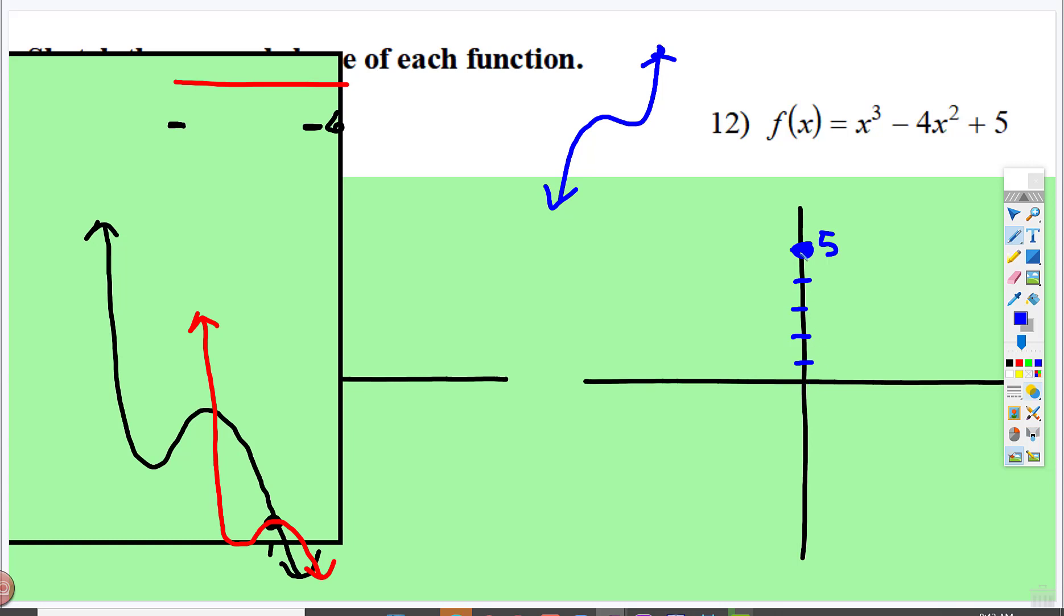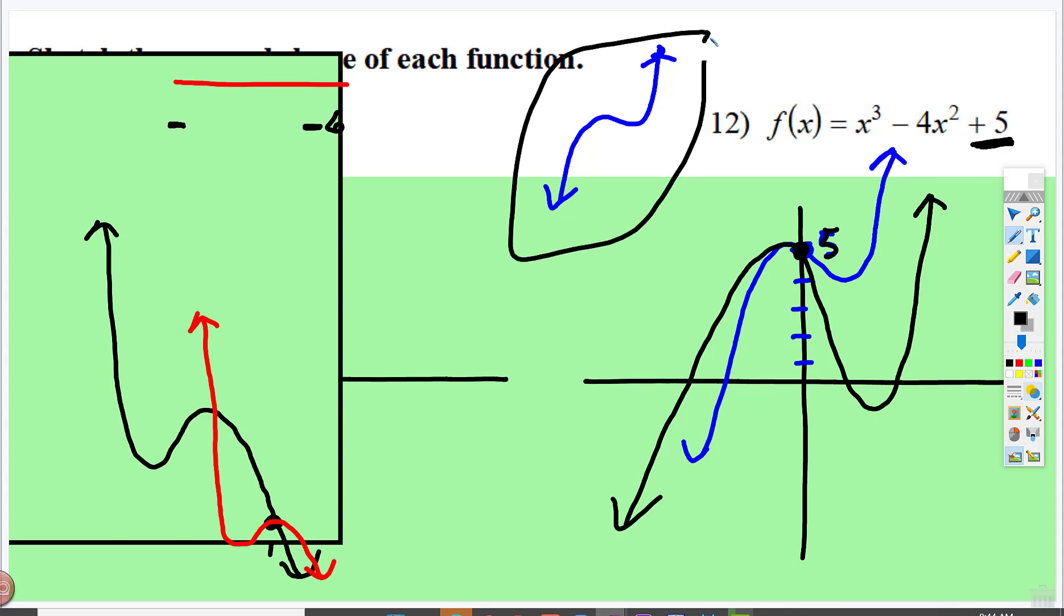It touches at the origin, but now it touches up here. So maybe it's doing this, or maybe... I'm not sure what that graph is, but what I do know is that it touches at positive 5 on the y-axis, and this is the general shape.